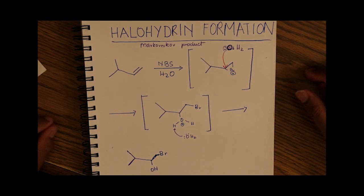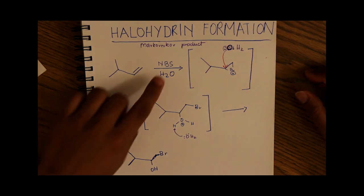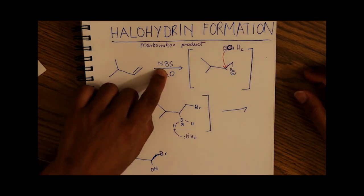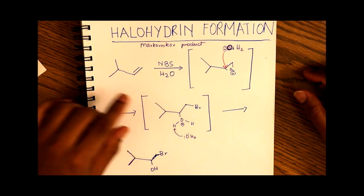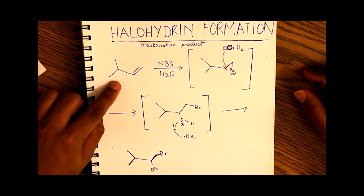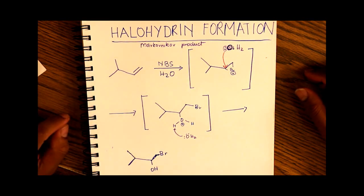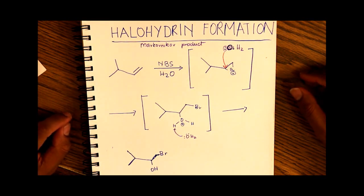What happens when you add N-bromosuccinimide in the presence of water to an alkene? N-bromosuccinimide, or NBS, is a convenient source of the bromine radical.